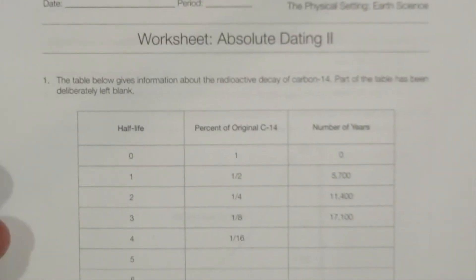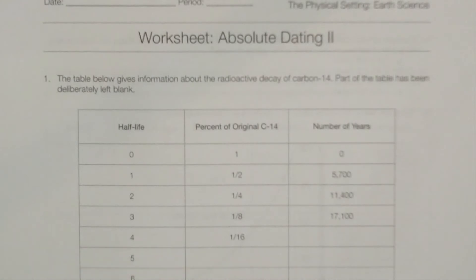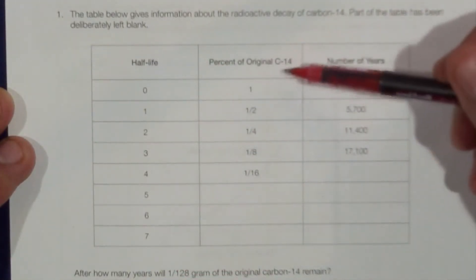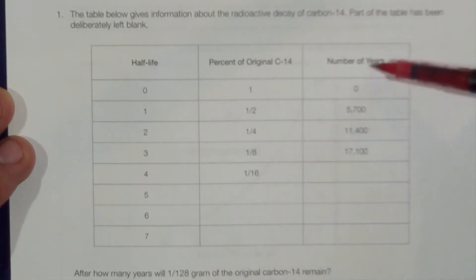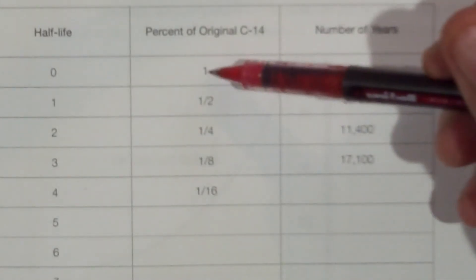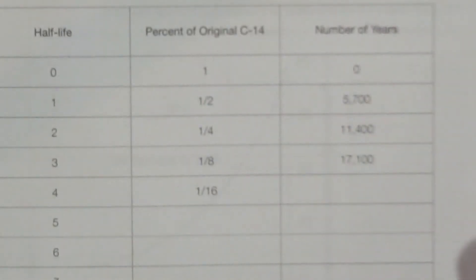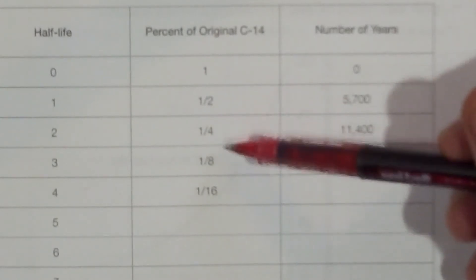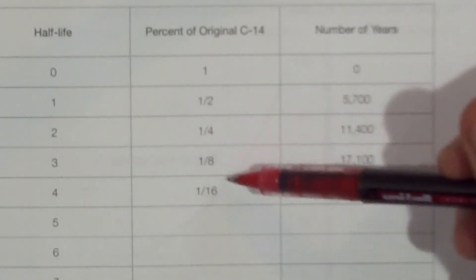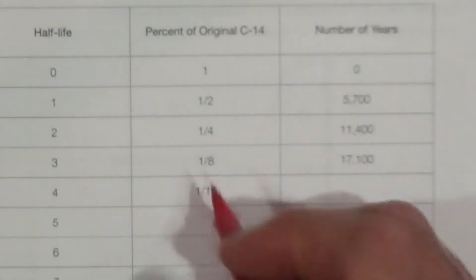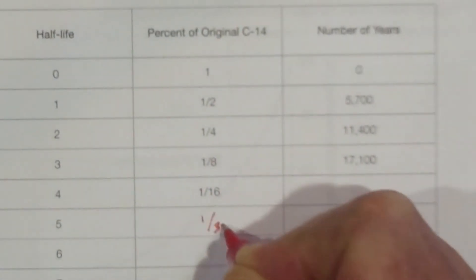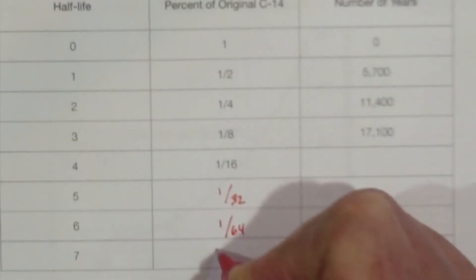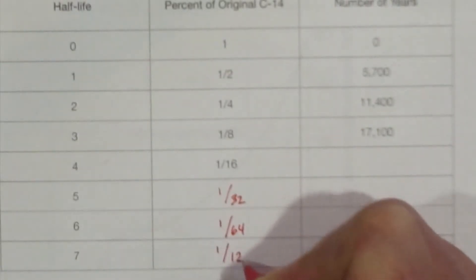Worksheet 2, Absolute Dating 2. The table below gives information about the radioactive decay of carbon-14. Part of the table has been deliberately left blank. On the table, we have half-lives, percent of original carbon-14, and the number of years. To figure out the percent: if we start off with 100%, after 1 half-life we have 50%, after 2 we have 25%, after 3 we have 12.5% (1/8), after 4 we have 1/16, after 5 we have 1/32, then 1/64, and then 1/128.